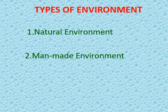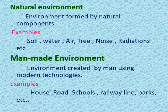Types of Environment are Natural Environment and Man-made Environment. The natural environment is made up of natural components — examples include soil, air, water, etc. Man-made Environment is the environment created by man using modern technologies. Examples are house, road, schools, colleges, etc.